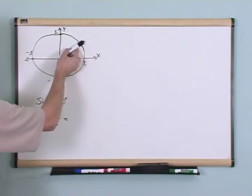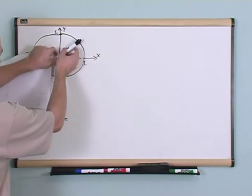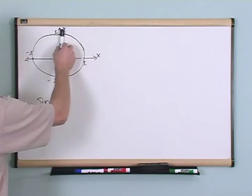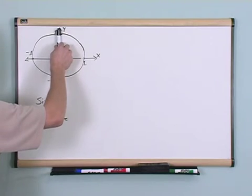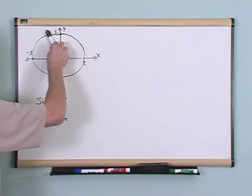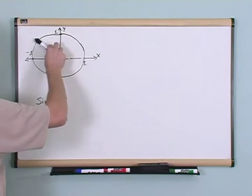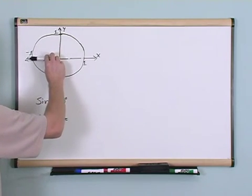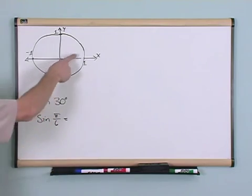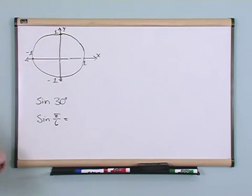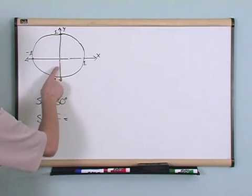As we rotate, the sine is going to get bigger and bigger because the y component is getting larger and larger — eventually it gets to one. So up here at 90 degrees, or equivalently pi over 2 radians, the sine of this angle is positive one. Then as we continue rotating down, the sine goes down again because the y component gets lower, and eventually it goes back down to zero. So as you change the angle, the sine goes up to one — its maximum — then down to zero, then down to negative one, and then back up.